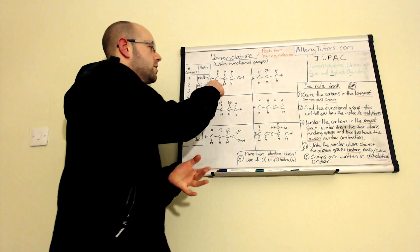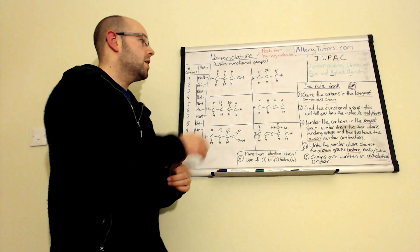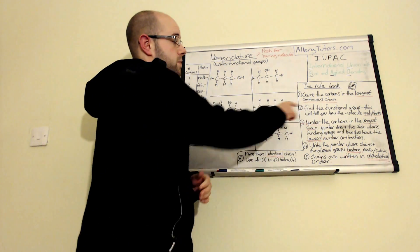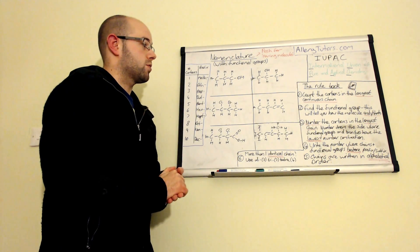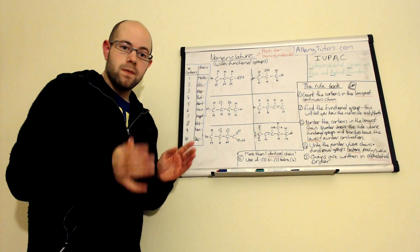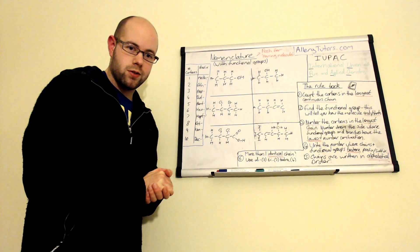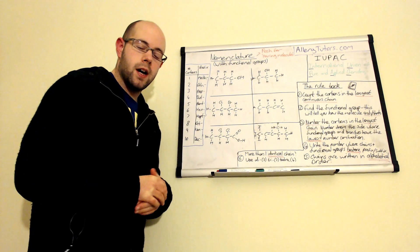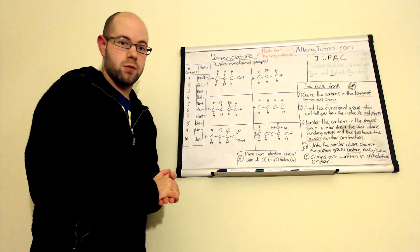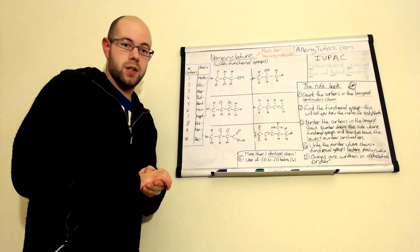So let's get started with this first one. The first job is to find the longest continuous chain, and we can see here the longest continuous chain is three. Once we've done that, we need to find the functional group, which in this case is OH. There's also a video on the functional groups you need to know for AS chemistry - if you're not sure, click the link below. I'll assume that you know the functional groups for this video.